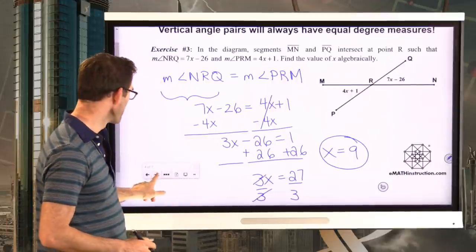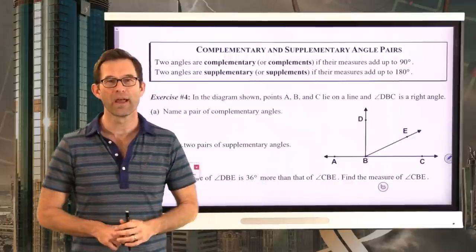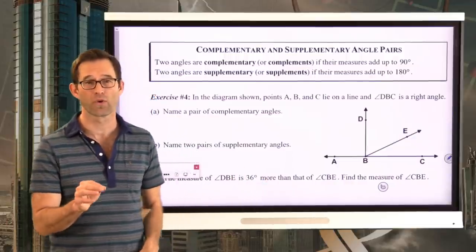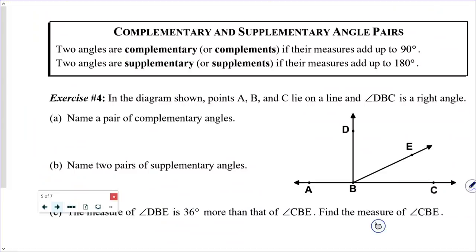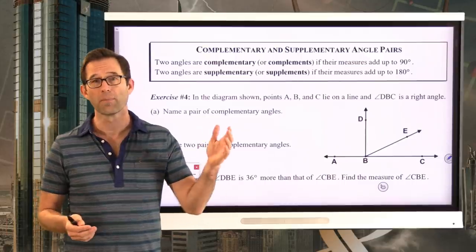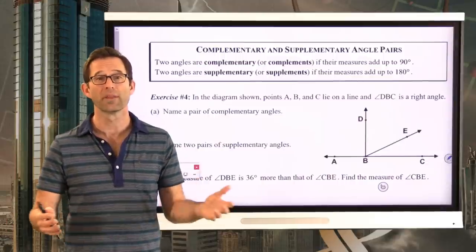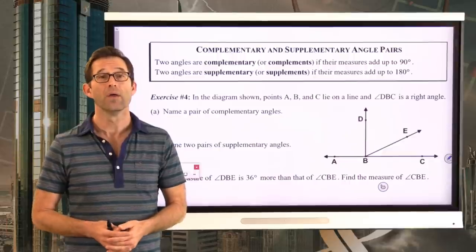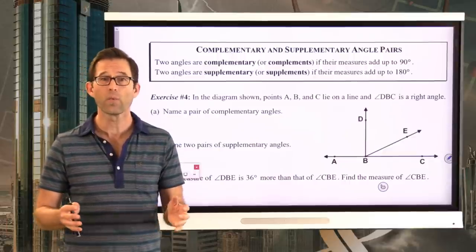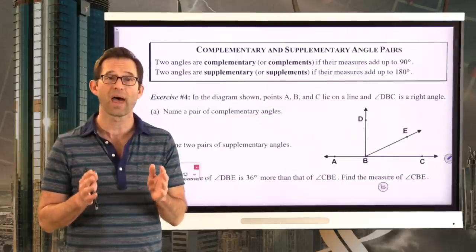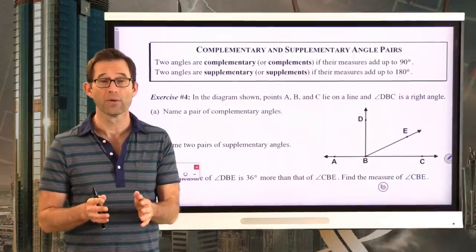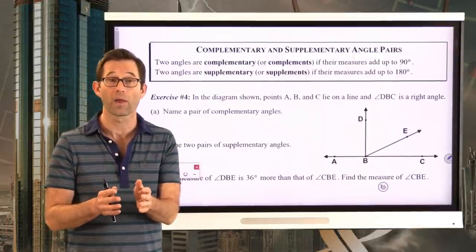The fundamental thing we did was use geometry to recognize what to do with the algebraic expressions — specifically that this was a vertical angle pair, so those angles had to be equal. Let's look at complementary and supplementary angle pairs. Two angles are complementary, also known as complements, if their measures add up to 90 degrees. Two angles are supplementary, or supplements, if their measures add up to 180 degrees. Complementary angles add up to a right angle; supplementary angles add up to a straight angle.